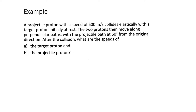In this problem, a projectile proton has a speed of 500 meters per second and collides elastically with a target proton initially at rest. After the collision, the two protons move along perpendicular paths with the projectile path at 60 degrees from the original direction. So the projectile goes off at 60 degrees and the target proton moves at 30 degrees — we're asked for the speeds of both protons after the collision.